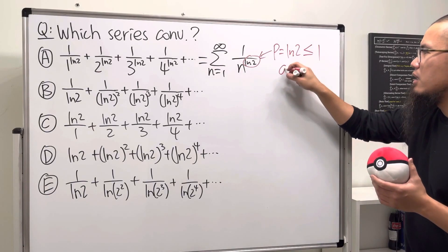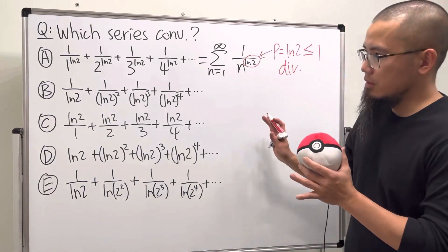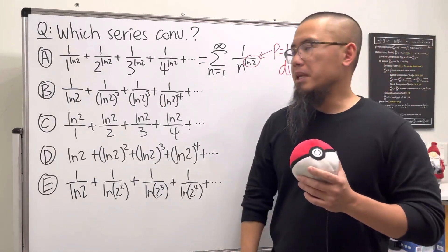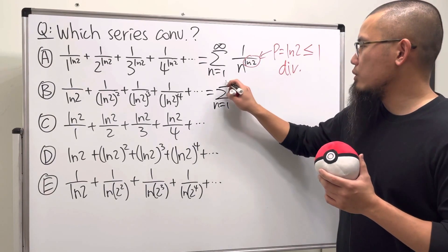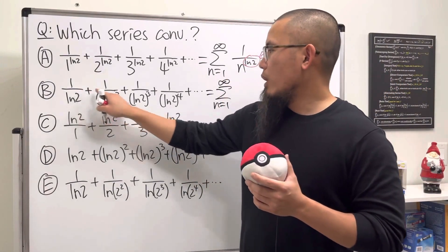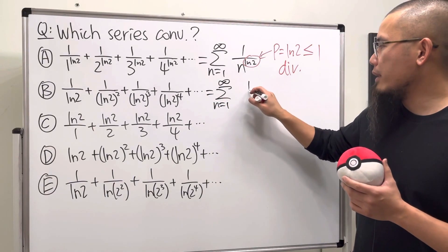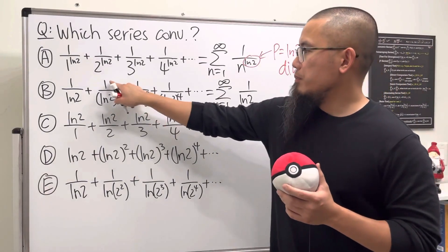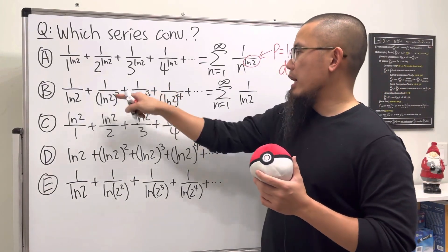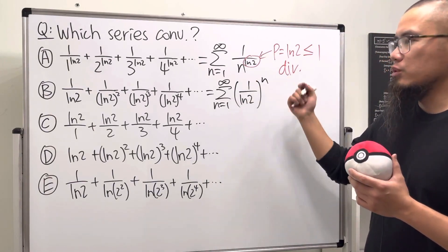B. All right, let's go ahead and put this into summation form as well. Sum as n goes from one to infinity—here 1, 2, 3, 4, so that's the power—so we're looking at 1 over ln2. But because that one is on the top, we can actually just put this right here raised to the nth power. One to the nth power is just one.